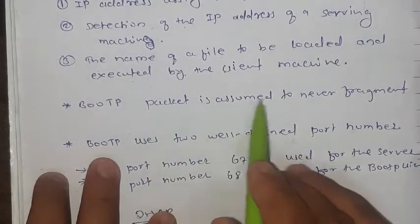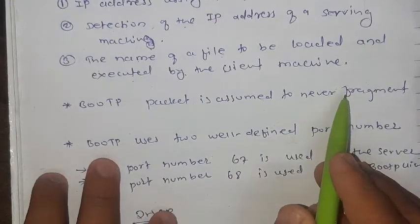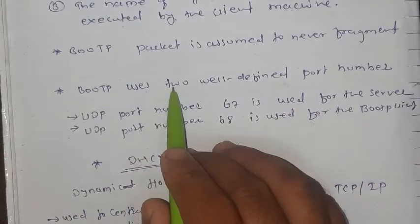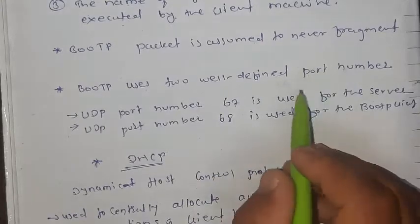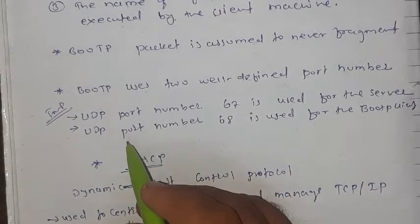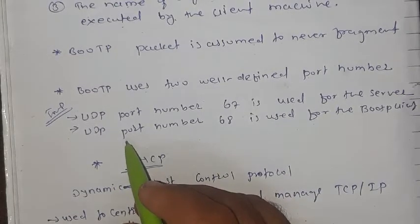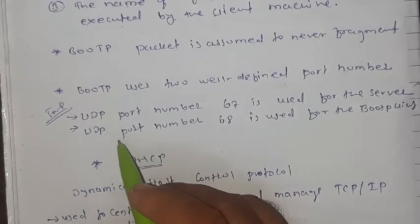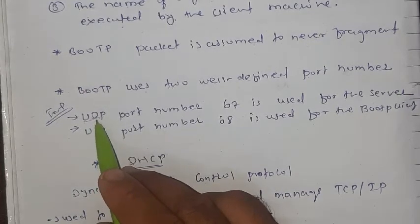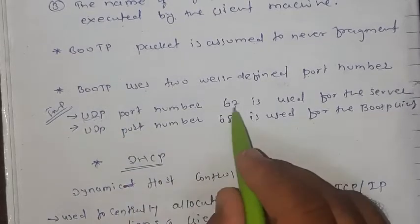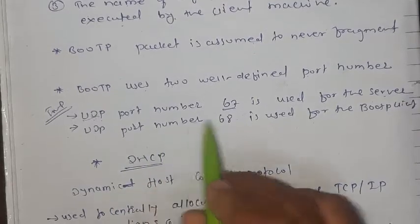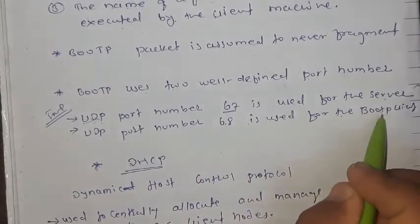A BOOTP packet is assumed to never fragment, meaning you cannot fragment the packet of BOOTP. Next, BOOTP uses two well-defined port numbers. UDP port number 67 is used for the server, and UDP port number 68 is used for the BOOTP client.